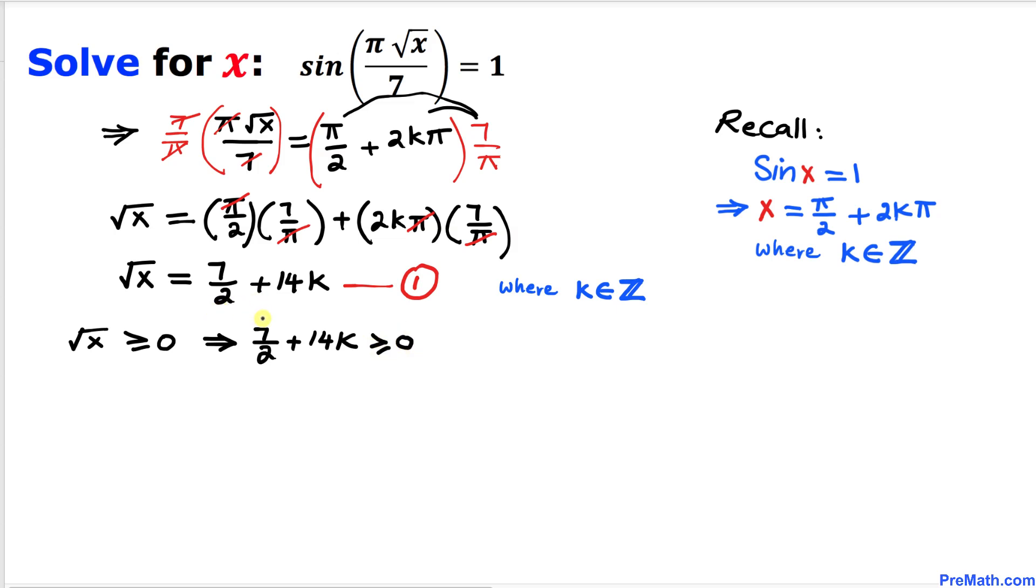Let's move 7 over 2 to the other side. So 14k is greater than or equal to negative 7 divided by 2.